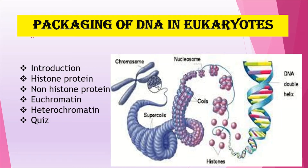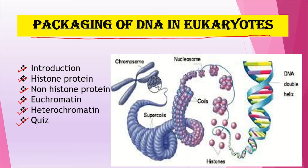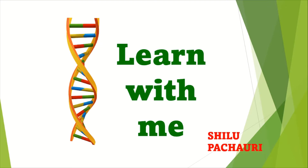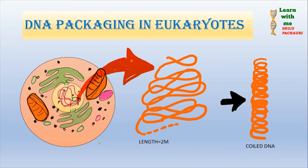Hello friends, we are going to study the packaging of DNA in eukaryotes in this video. Today we will discuss: introduction, histone proteins, non-histone proteins, euchromatin, and heterochromatin. There will also be one question for you to answer in the comment section. Welcome to the channel Learn With Me, and I am Shilu Pachauri. Do you know how long DNA could be? If all the DNA from a single cell is pulled out and stretched, it would be approximately 2 meters in length. So how does this 2-meter-long DNA fit inside such a tiny nucleus, given that cells are microscopic and the nucleus is even smaller?